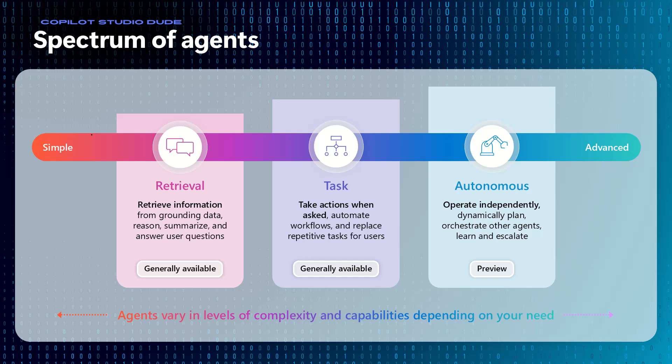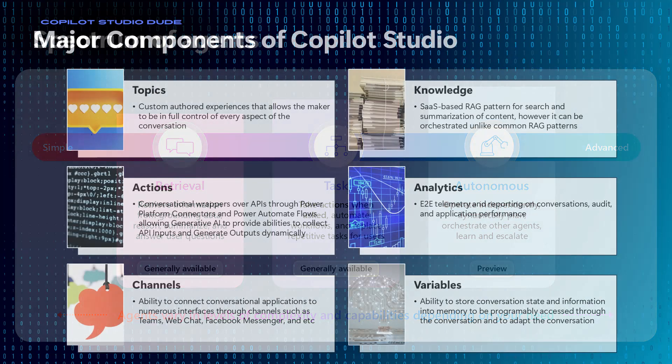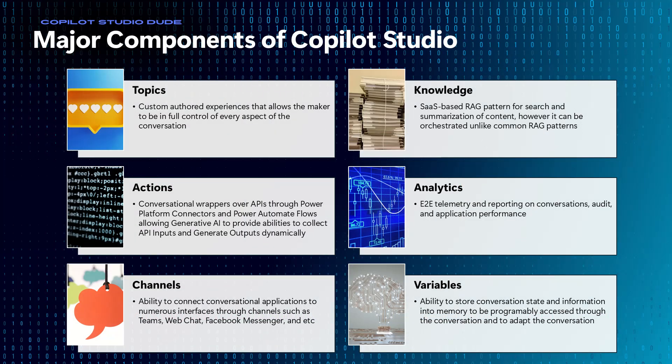The autonomous area is where we're really allowing AI to take a set of tools, be triggered by something that is not necessarily a real human, and use that to complete a business process or do a job just like a human would. The key tools we're talking about here are things like topics, knowledge, or actions.